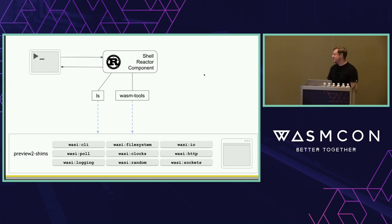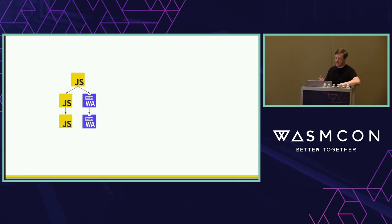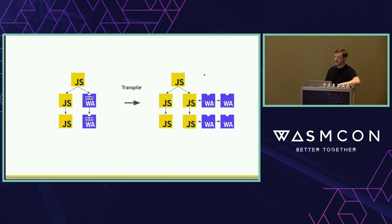You can see the component model has these composition semantics through first-class instantiation and static linkage, giving different linkage scenarios. You get graphs of JS modules interacting with WebAssembly components, and in the transpilation operation we get graphs of JS and WebAssembly. It's still glue being generated, but it's glue with a future — you have the first-class static semantics of the component model built to link and reason about, enabling cross-WASM optimizations.